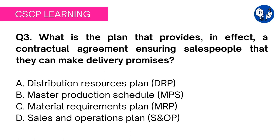Option C: material requirements planning (MRP) is a technique that uses bill of material data, inventory data, and the master production schedule to calculate requirements for material. Salespeople have nothing to do with the arrangement of raw material, so this is not the correct choice. Option D: S&OP is a process to develop tactical plans integrating customer-focused marketing plans with supply chain management. Salespeople do help in S&OP, but S&OP does not provide information related to production quantities. Option B, MPS, is the correct answer.